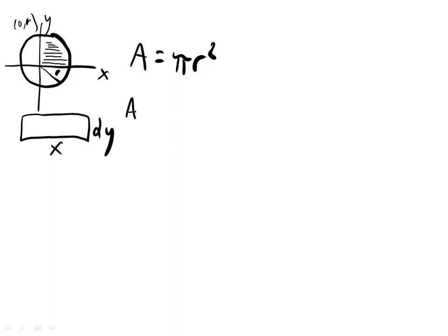And so the area is just going to be 4 times the integral from 0 to r. We're going from 0 to r in terms of the y of x times dy. That's the area of each little rectangle.